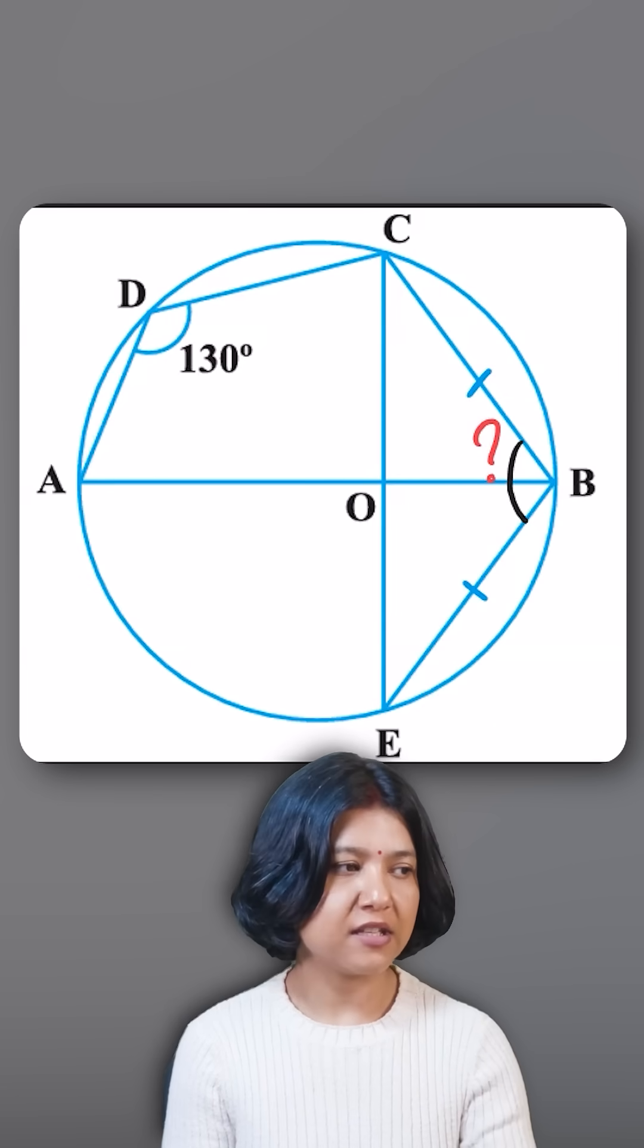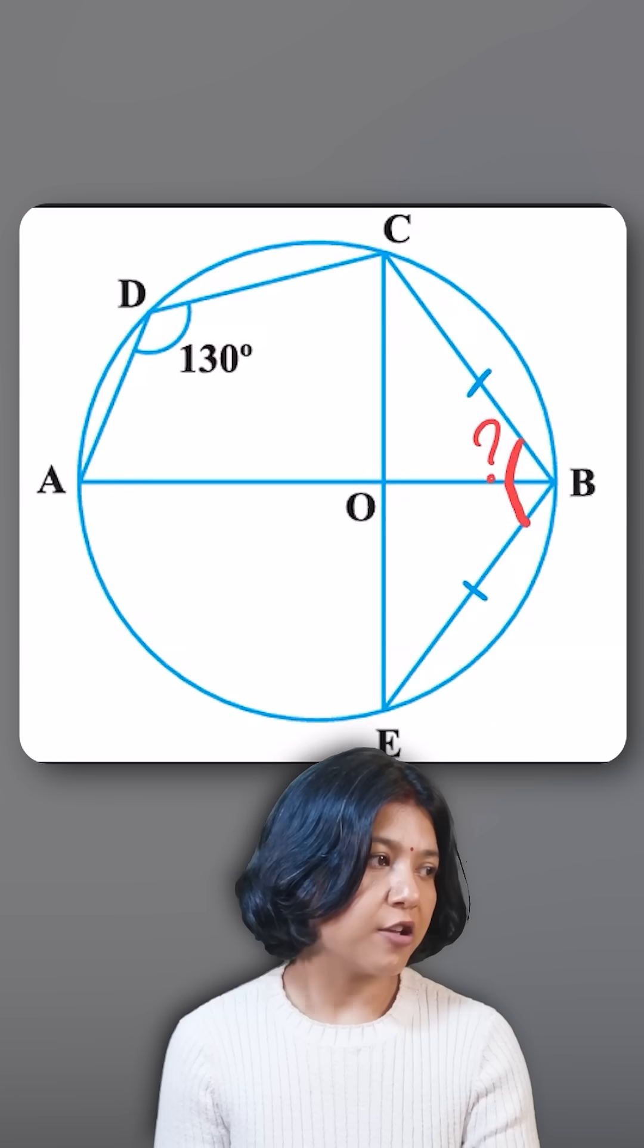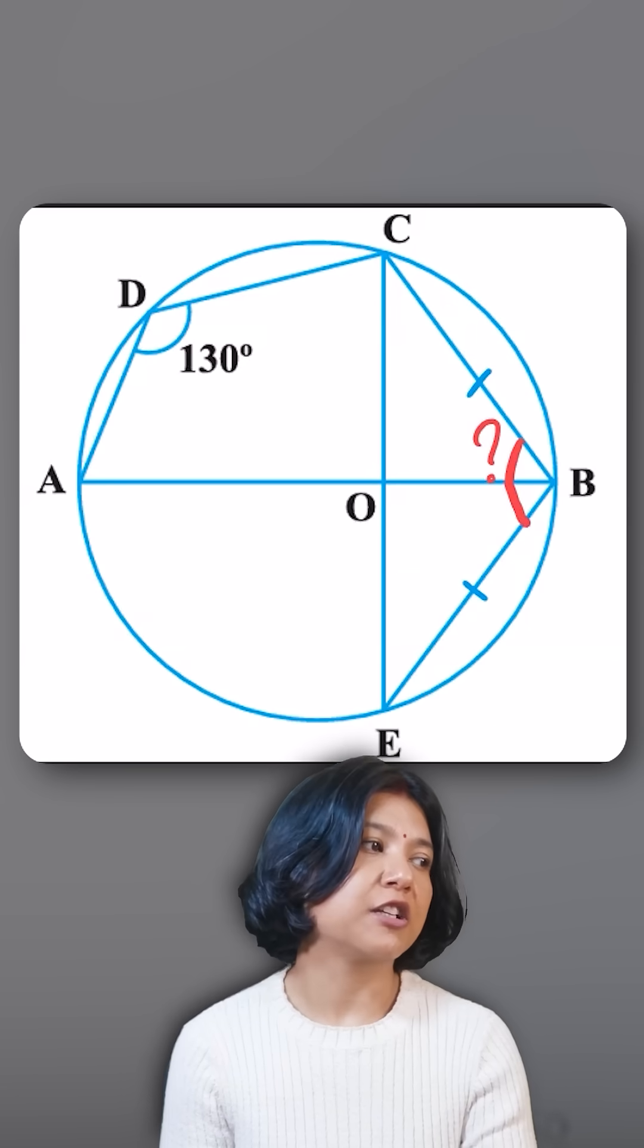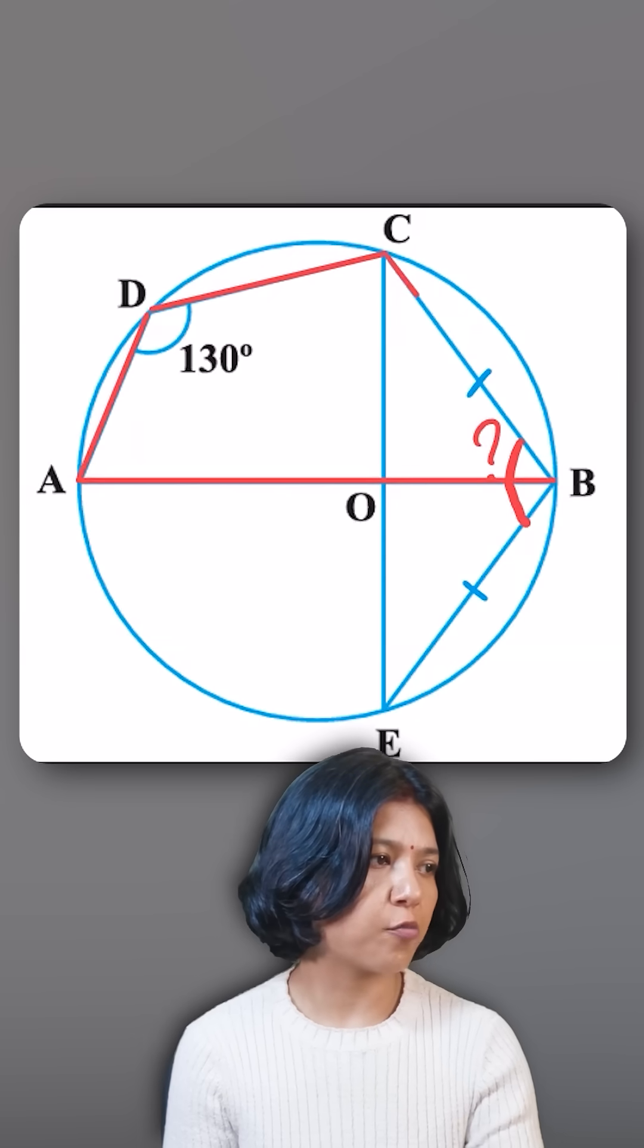They want you to find the angle CBE. Start from the given value. You look at the given angle 130 degrees - it is a part of this quadrilateral. When I see all four points are on the circle, I call it a cyclic quadrilateral.